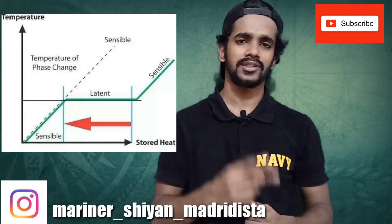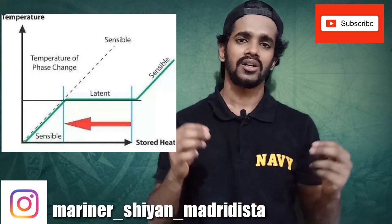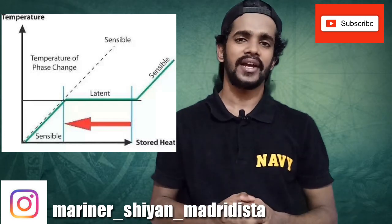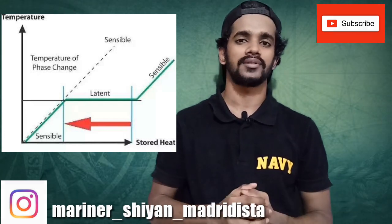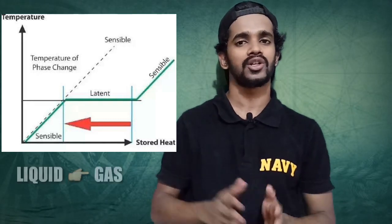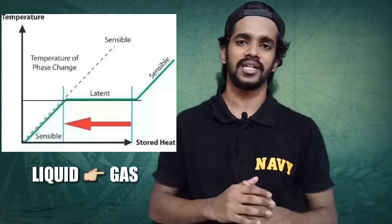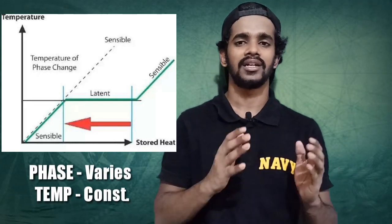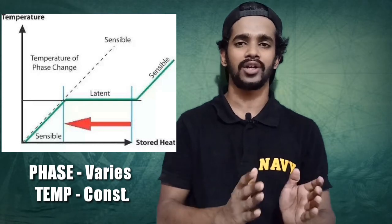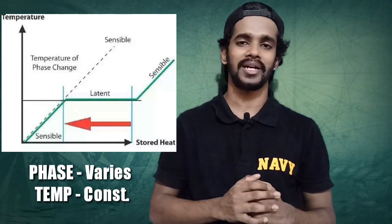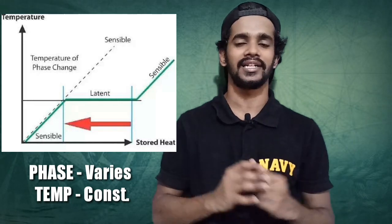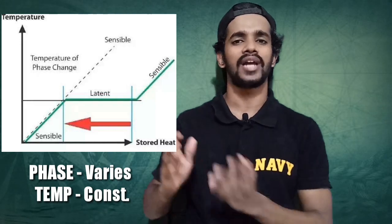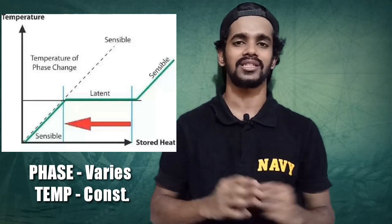At 100 degrees Celsius, two conditions exist: the water will be in the form of liquid as well as water vapor. Now if we again heat the water, the change of phase occurs from liquid to gaseous state. Here the phase is not constant — it is being changed from liquid to gaseous state — but the temperature remains constant at 100 degrees itself. There is no increment in temperature, but the phase has changed from liquid to gaseous state. The heat added here is known as latent heat.